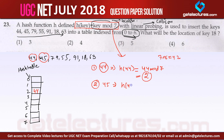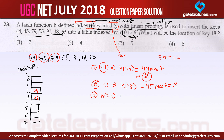The second key is 45. Hash(45) = 45 mod 7, which gives us 3, so 45 will be placed at index location 3. The next number is 79. Hash(79) = 79 mod 7, which also gives us 2, but there is already an element at index 2, so we have a collision.